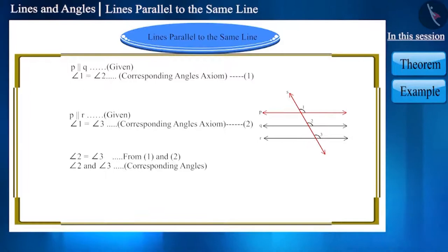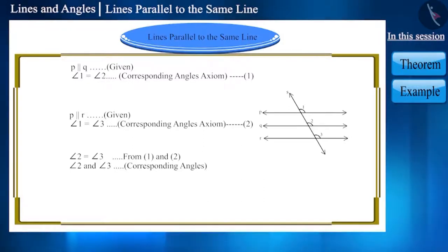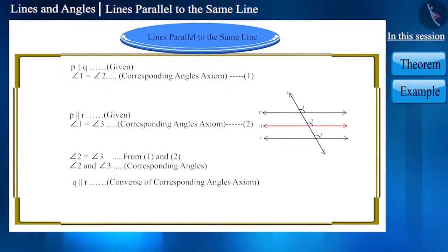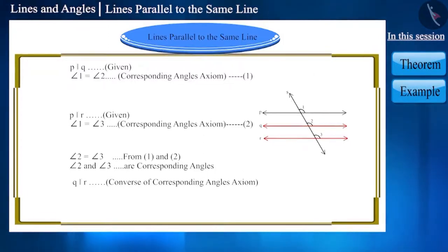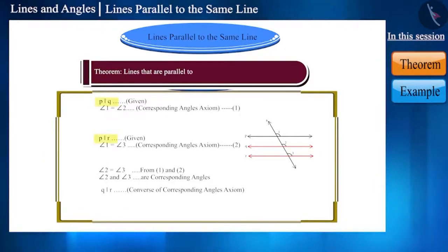Using the converse of the corresponding angles axiom, we can say that line Q and line R will also be parallel. We can write this result as a theorem: lines that are parallel to the same line are parallel to each other.